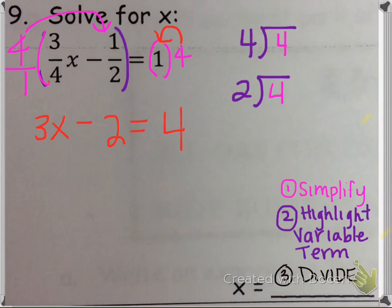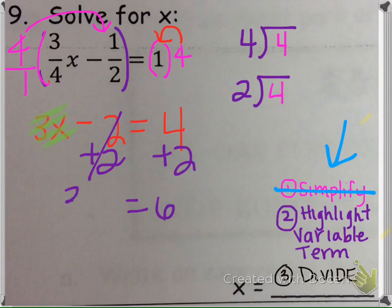Okay, so now we continue these steps right here now that there are no fractions. We can't simplify, so I highlight where the variable is, and we want that by itself here. So since we want that by itself, we're going to add 2, and then divide by 3. So we get x equals 2.